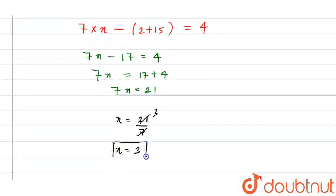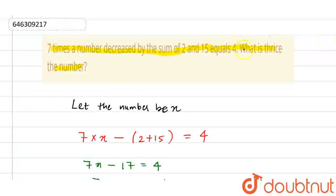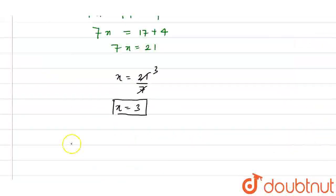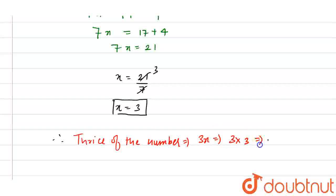x is equal to 3. Now, what will we get? Thrice of the number. So, the thrice of the number we can write here. That is 3x, that is equals to 3 into 3, which is equals to 9. So, my final answer is equals to 9. Thank you.